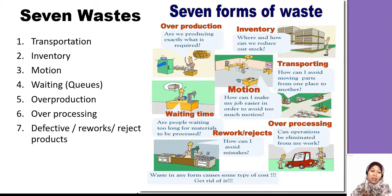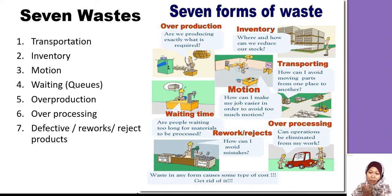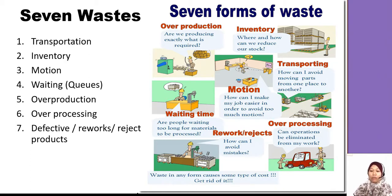The last one is defective, rework, and reject — this is the most visible type of waste. You can find it easily in manufacturing because they don't standardize their work, machines aren't maintained, and workers aren't properly trained. So lots of defects happen. You need to ensure that everything leading to defects or rework is solved to reduce the waste.